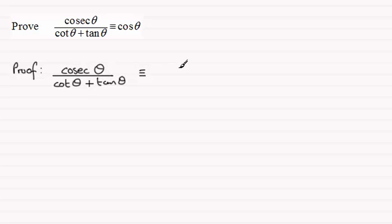So cosec theta is the same as one divided by sine theta. We'll put one divided by sine theta, and all of this is divided by cot theta, which is cos theta over sine theta.